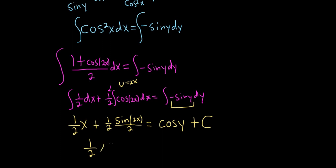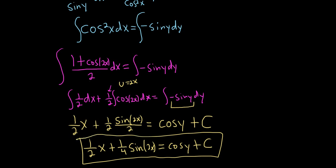So this is (1/2)x + (1/4)sin(2x) = cos(y) + C. And that would be the final answer.